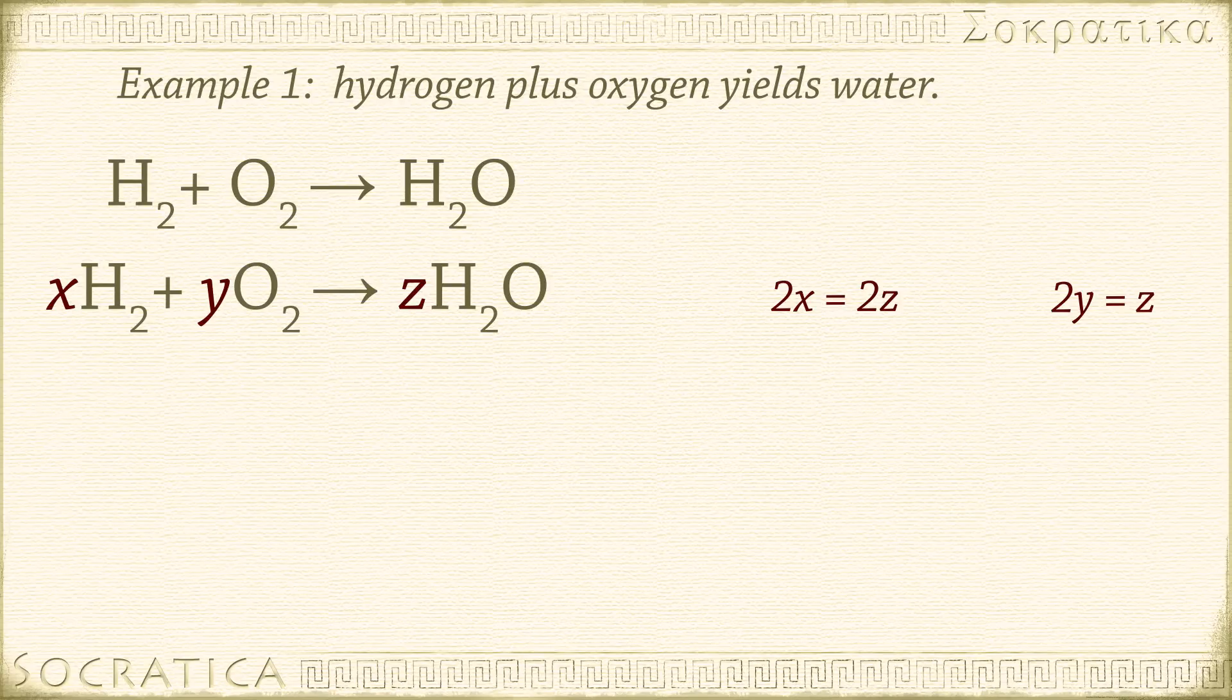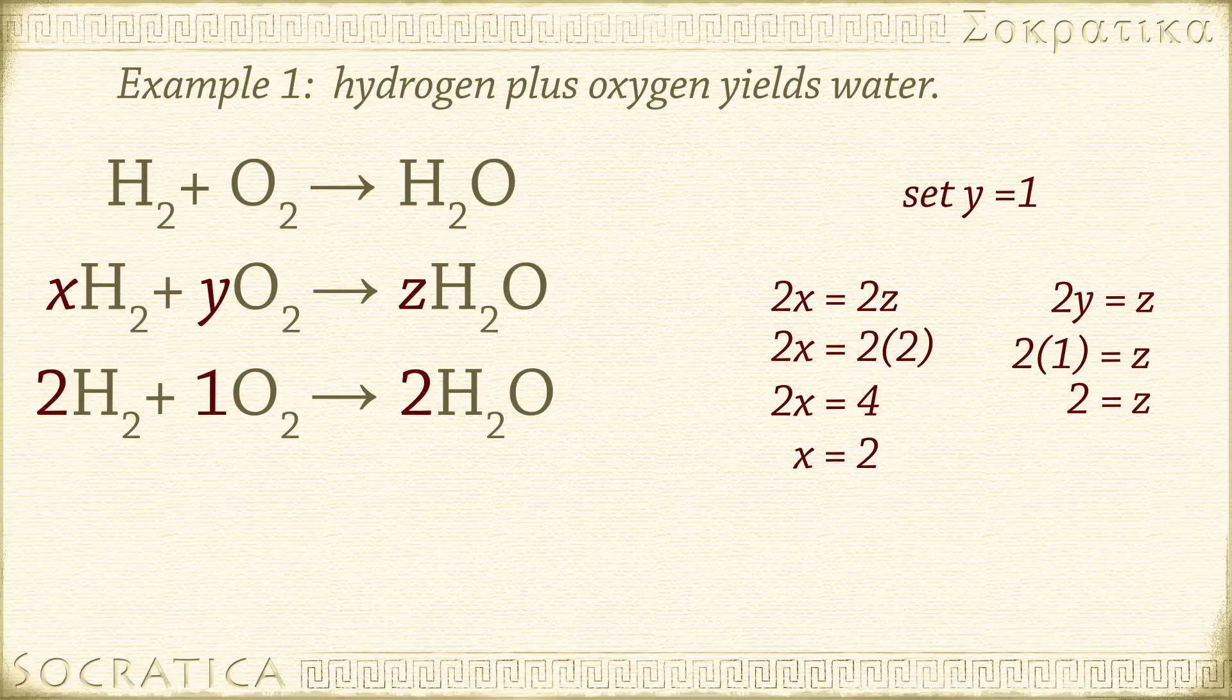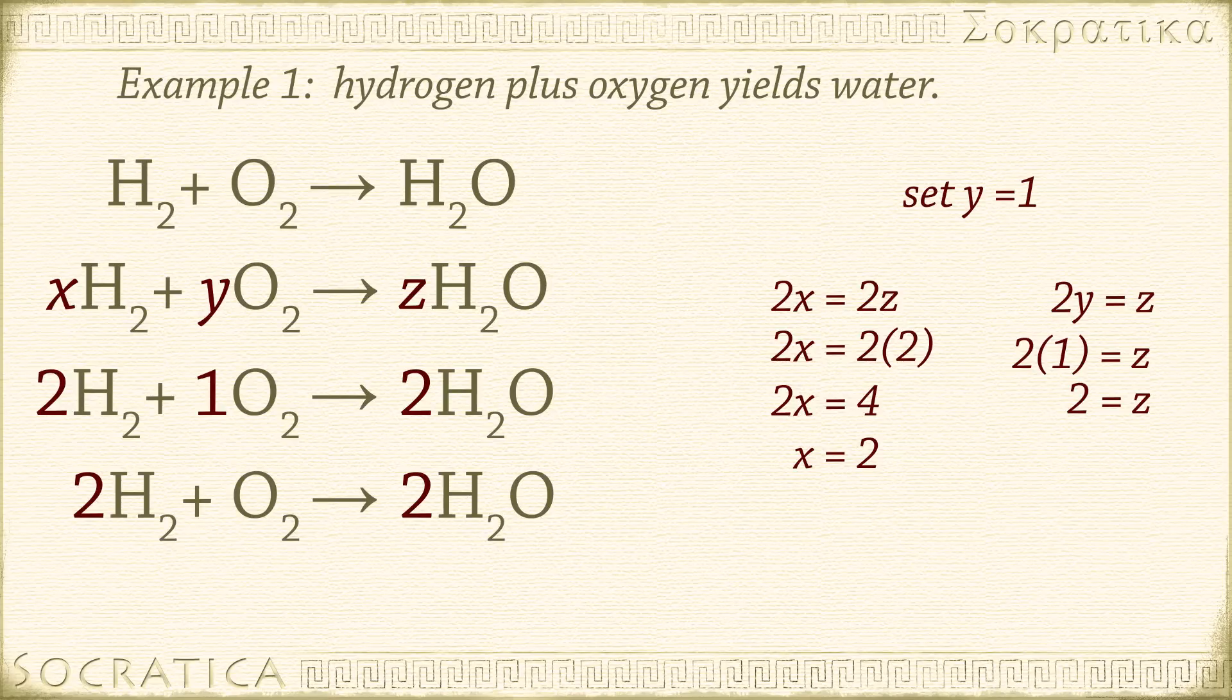What if we start with one molecule of oxygen gas? That means we set Y equal to 1. 2 times 1 equals Z. 2 equals Z. 2X equals 2 times 2. 2X equals 4. So X equals 2. Let's rewrite our chemical reaction using these coefficients. 2H2 plus 1 O2 yields 2H2O. The coefficient of 1 is understood, so we rewrite as 2H2 plus O2 yields 2H2O. It's a good idea to double-check your work and make sure there are the same number of atoms on both sides. On the left we have 4H and 2O, and on the right we have 4H and 2O. It's balanced.